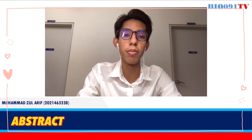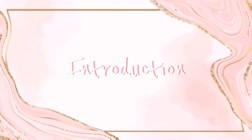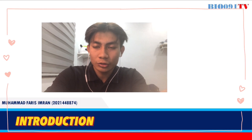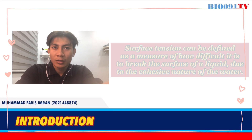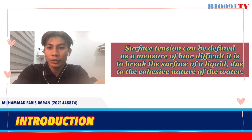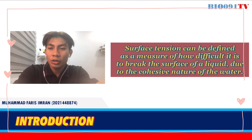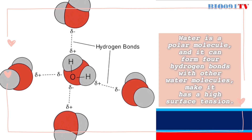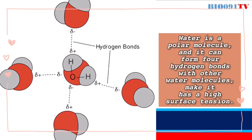Now, onto the introduction. Surface tension can be defined as a measure of how difficult it is to break the surface of a liquid, due to the cohesive nature of the water. In this experiment, water is said to have high surface tension since it can form four hydrogen bonds within the water molecules.